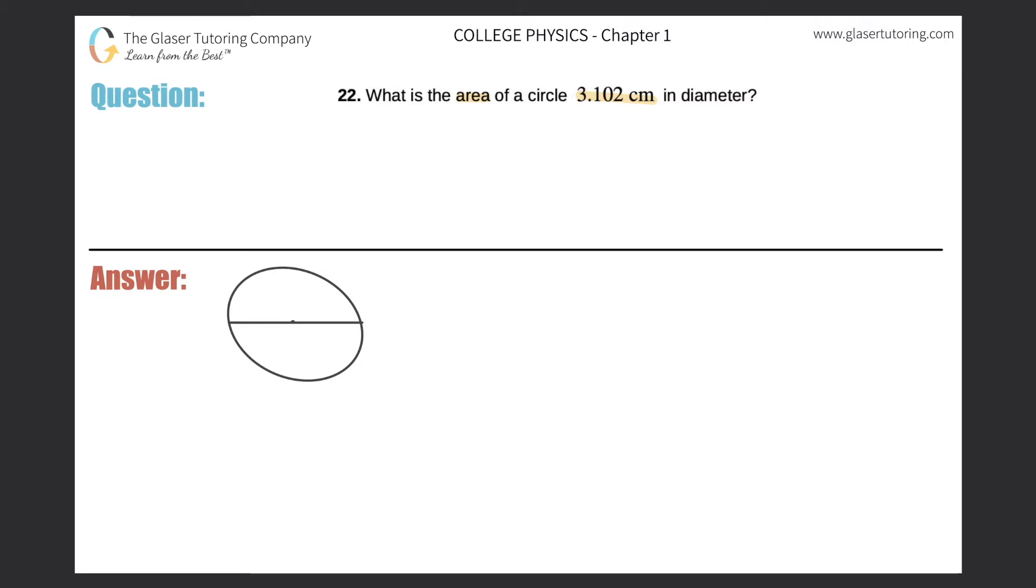Okay, so now the diameter of this whole length here is going to be equal to 3.102 centimeters. Okay, so we have a picture. And let's now see what the problem is asking us to do. It says to calculate the area, right, of a circle.